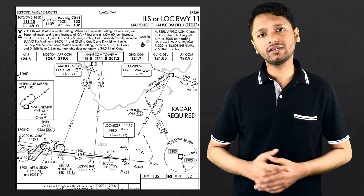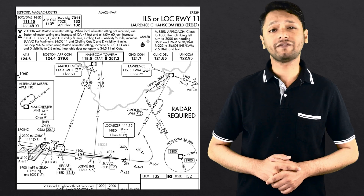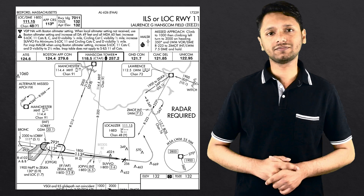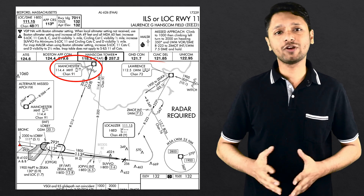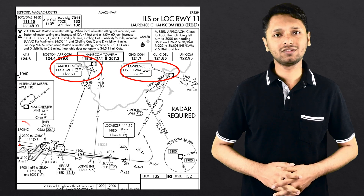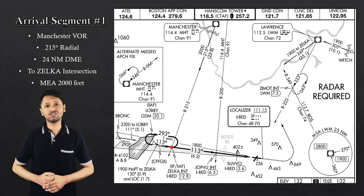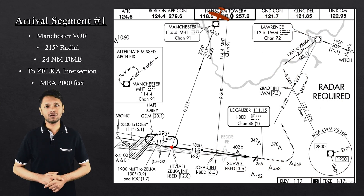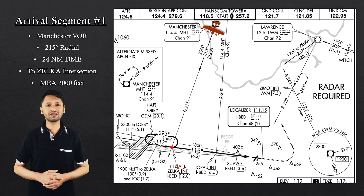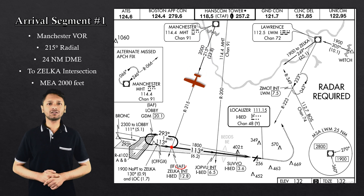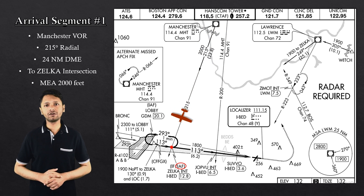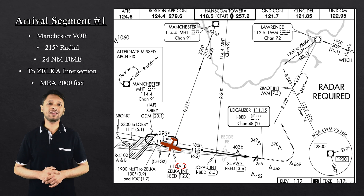In our case, the arrival segment uses feeder fixes. We have three separate arrival segments. The first one is noted by the Manchester VOR, flying inbound on the 215 radial, which is about 24 nautical miles to ZELTA intersection. The minimum enroute altitude, or MEA, to be flown here is 2,000 feet when we are on the segment and when ATC clears us for the approach.